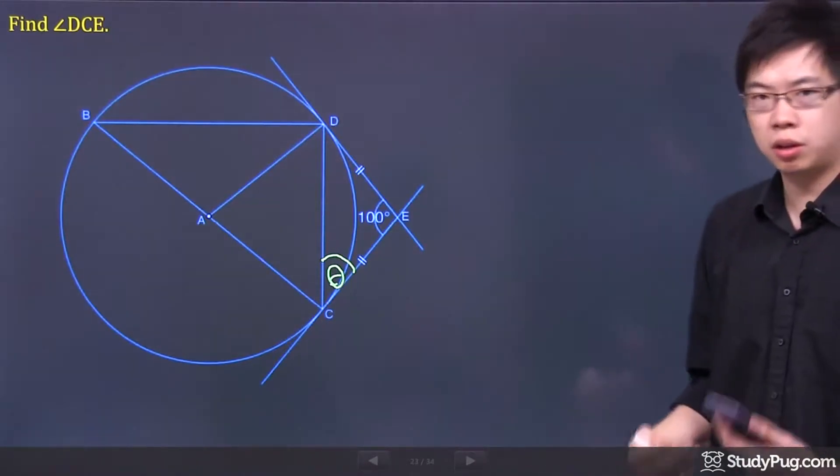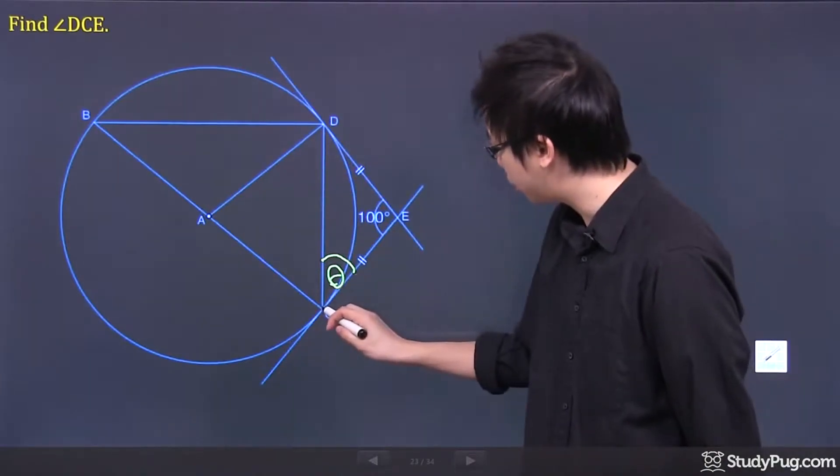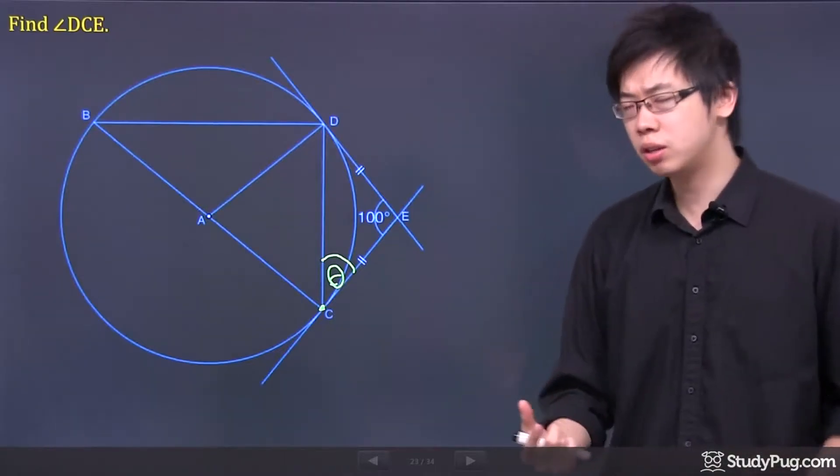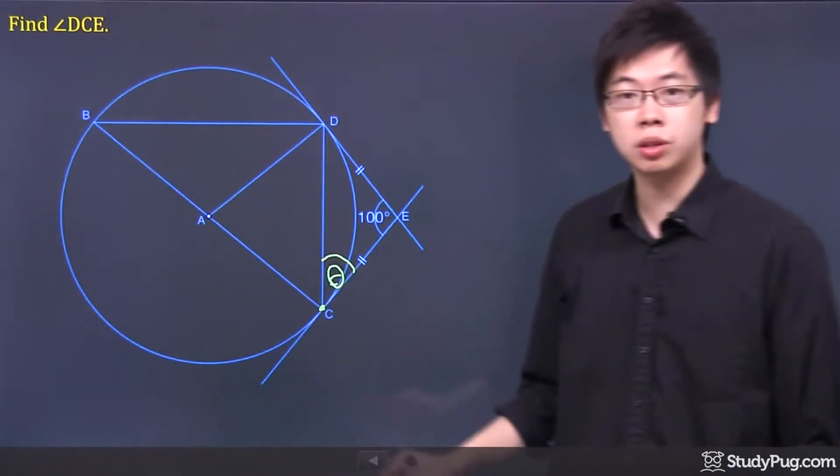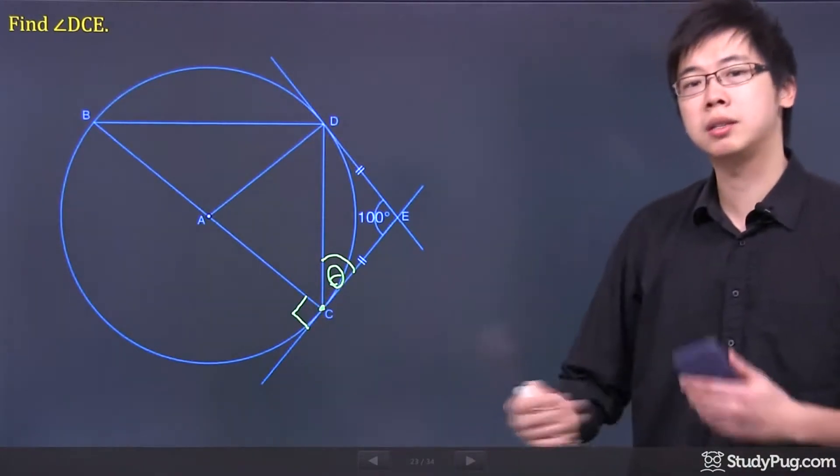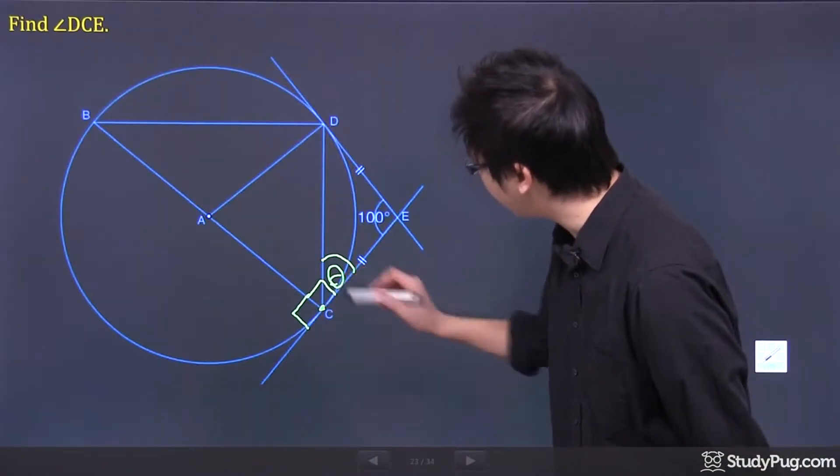So what do we know about the tangent property here? Well, these are tangent lines. Like this point right here, this line right here is tangent. Every time you draw a tangent line to your circle, they always form a perpendicular line to the center of your circle. So that will form a 90 degrees for sure, because it's perpendicular. So that means this is 90 degrees as well.